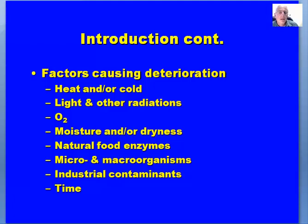As we go throughout the semester looking at methods of preservation, we'll be dealing with methods related to factors that can cause deterioration. Certainly heat and cold can cause loss of quality or deterioration of food products, but these are also methods that can be used for food preservation. Light and other radiations, oxygen, moisture and dryness — in some instances we use these as preservation methods; in other instances they are means of deterioration or loss of quality of the food product.